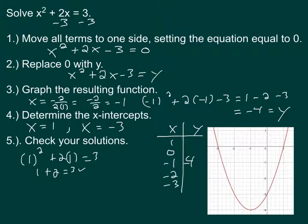And then I'll check the negative 3. So negative 3 squared plus 2 times negative 3. Hopefully that equals 3. Well, negative 3 squared is 9. 2 times negative 3 is negative 6. And 9 plus negative 6, that does, in fact, equal 3. So both of those work.